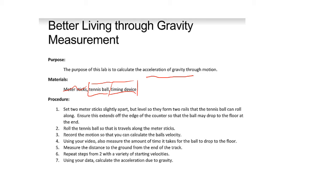But I'll show you why in a second. What you're going to do is set the meter sticks slightly apart but level so they can form two rails that the tennis ball can roll along. The end extends off the edge of the counter so the ball can drop to the floor at the end.